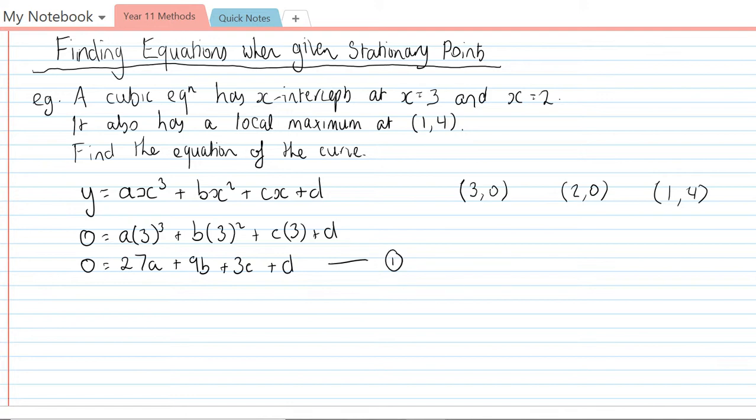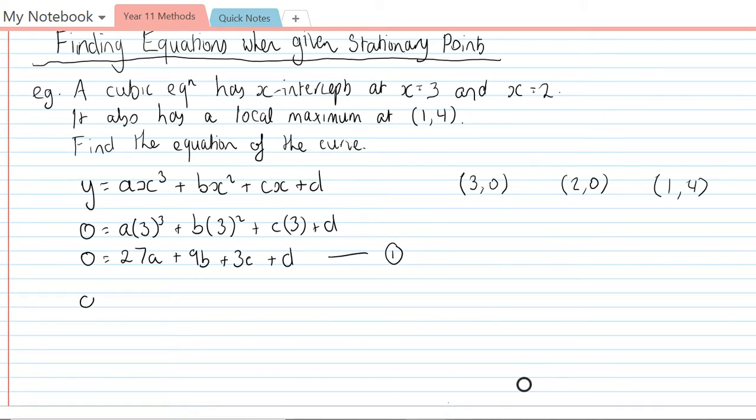The second equation comes from the coordinates (2,0), so again we're going to substitute that into the rule. The second one will be 0 = 8a + 4b + 2c + d. That is our second equation.